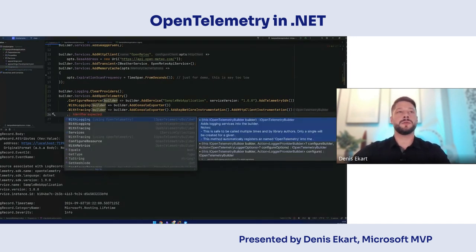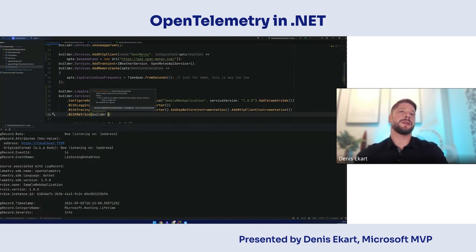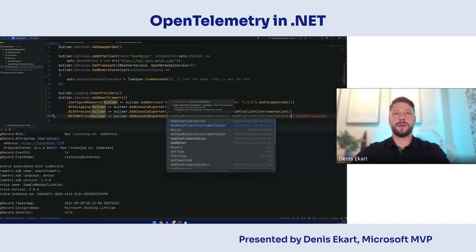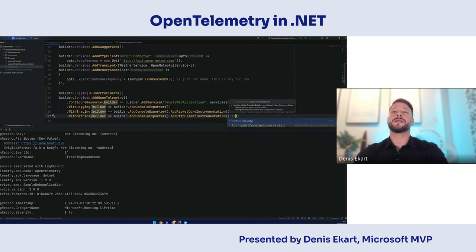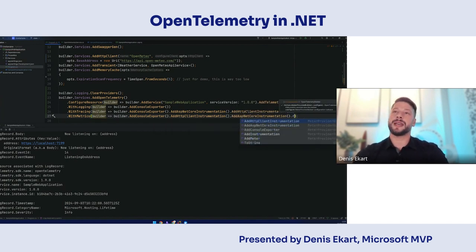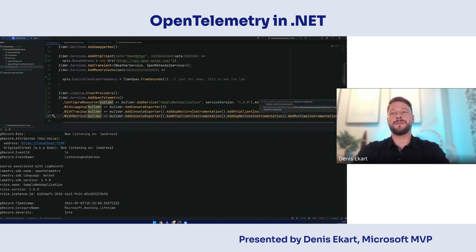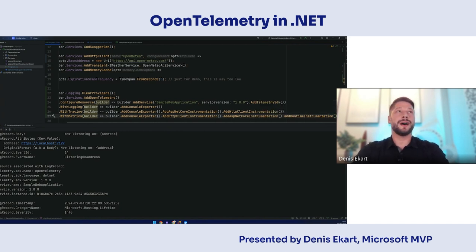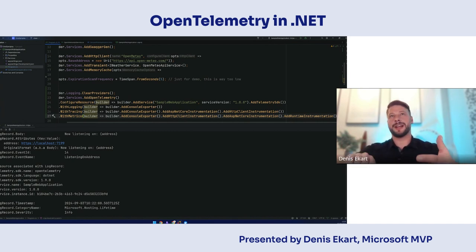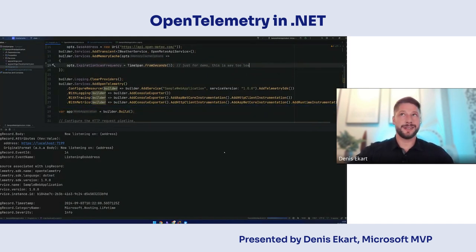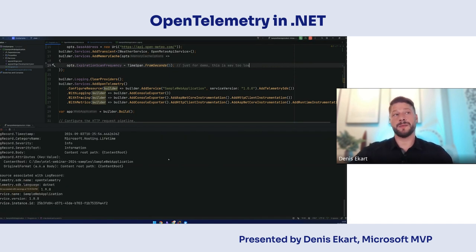To complete the full picture, we can also add metrics — again with a builder, saying builder.addConsoleExporter. We have HTTP client instrumentation, ASP.NET Core instrumentation, and for metrics we also have runtime instrumentation. This gives our application the ability to export signals related to the runtime, such as garbage collection, memory allocations, and so on. And right now we've just added OpenTelemetry to our application. If I start this, you can see it just works out of the box.